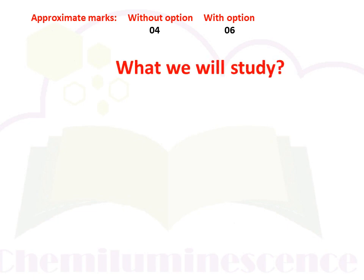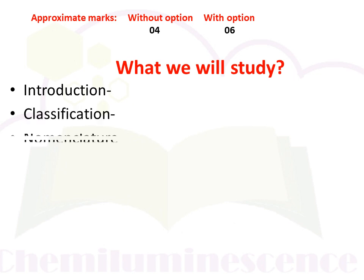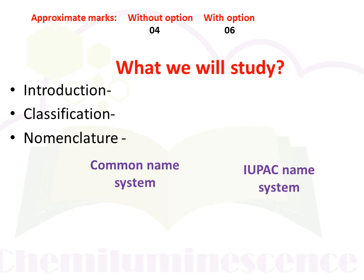What will we study in this unit? First, we will see the introduction of halogen derivatives. Next, classification of halogen derivatives. Then, nomenclature of halogen derivatives. There are two systems by which names of organic compounds are decided: the first is the common name system, and the second is the IUPAC name system. We will see both of them.